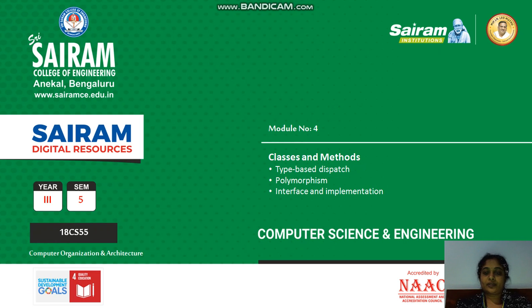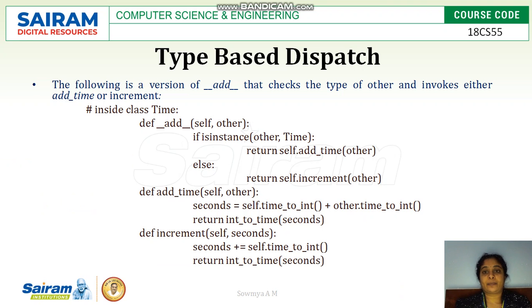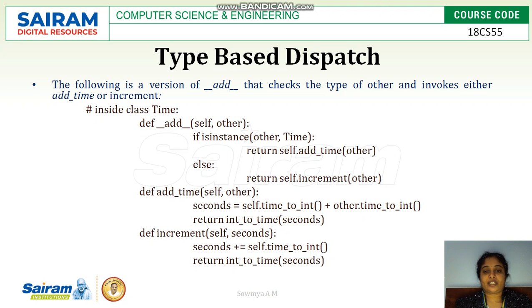Hello everyone. In this video we will see a few more topics from classes and methods. The first topic is type-based dispatch. We have seen operator overloading, where it was calling a method based on the operator passed as an argument to the print method. But what if you have two different types of add methods, based on the type of arguments you are passing?